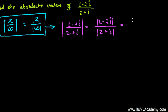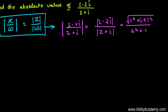We know very well how to find out the absolute value of anything — it's the real part squared plus the imaginary part squared, all inside the square root, divided by the real part squared plus the imaginary part squared. If nothing is written, then there is 1 being multiplied to i.